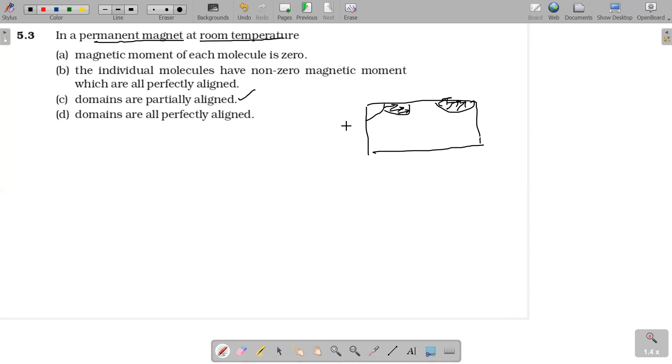Not everything will be aligned along the direction of Earth's magnetic field. If no external magnetic field is applied, domains are partially aligned along the direction of Earth's magnetic field. Partial alignment is most important.